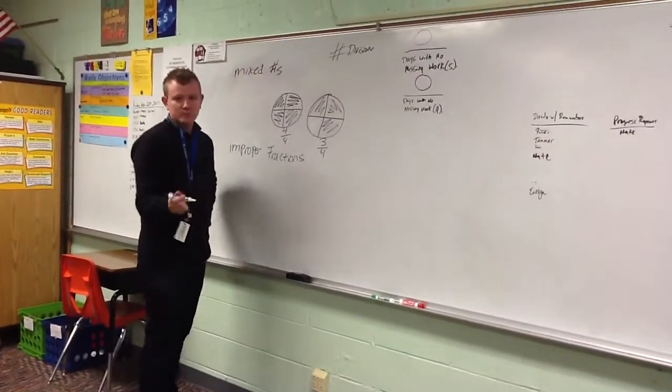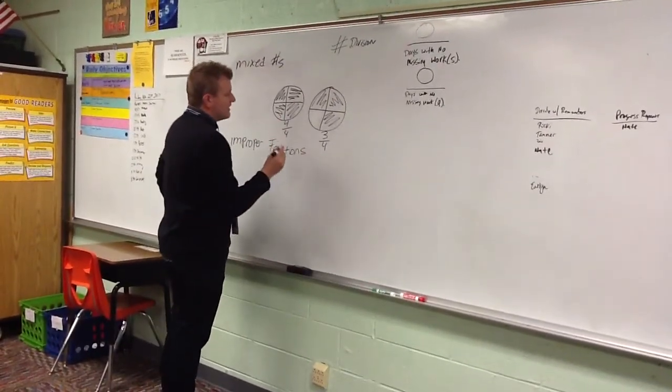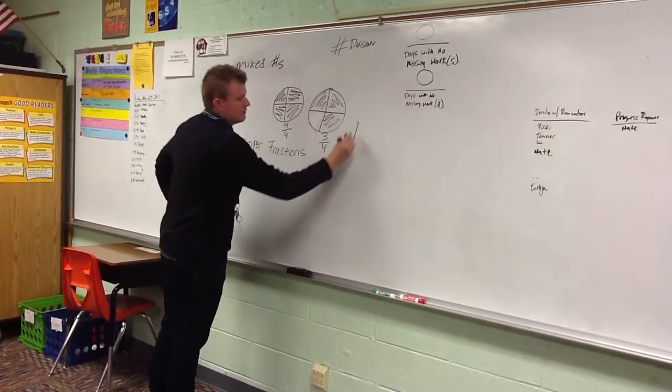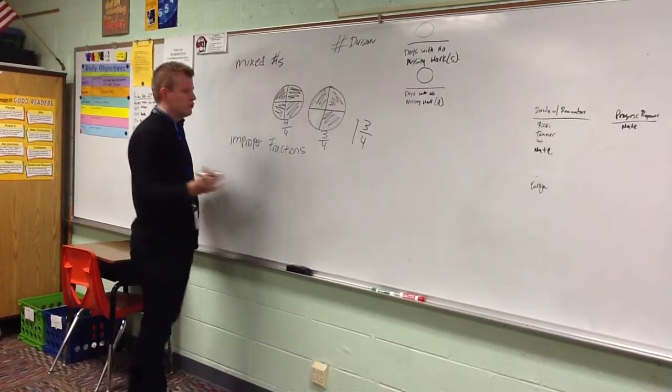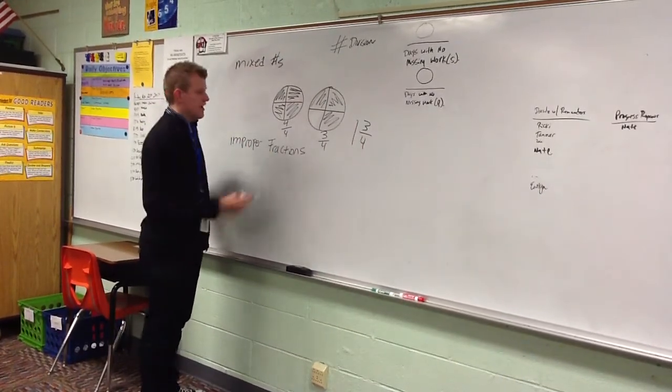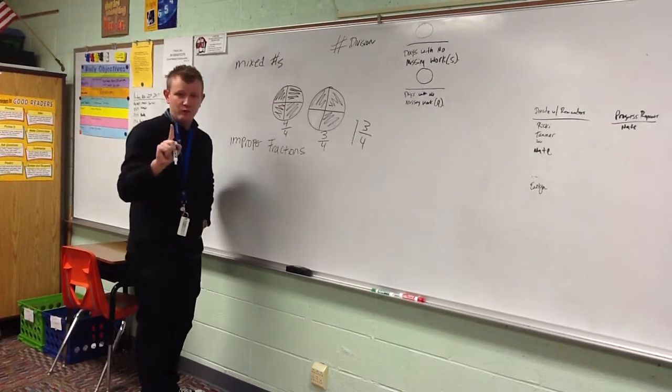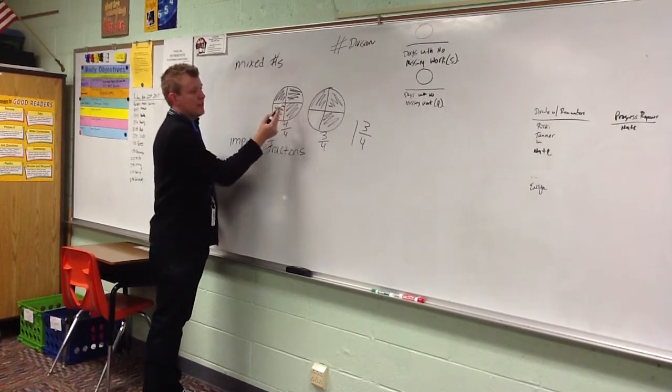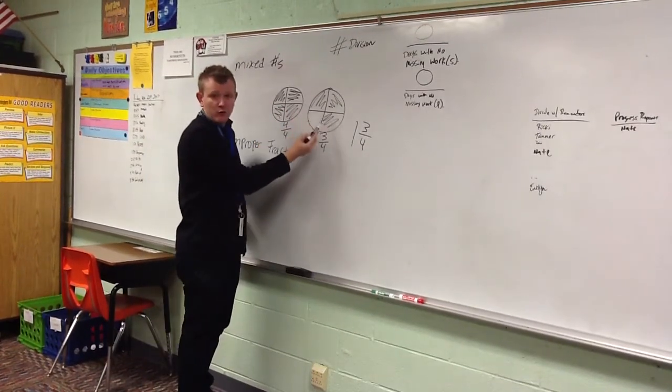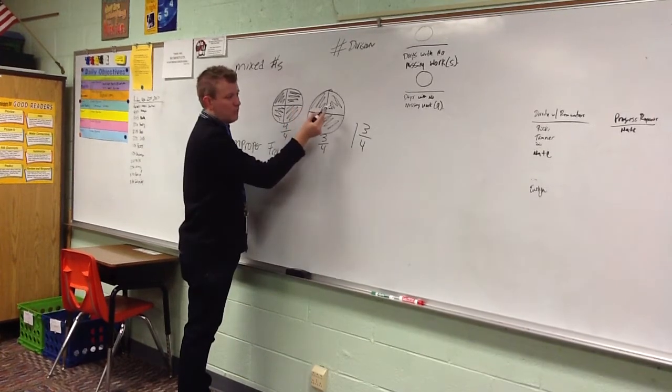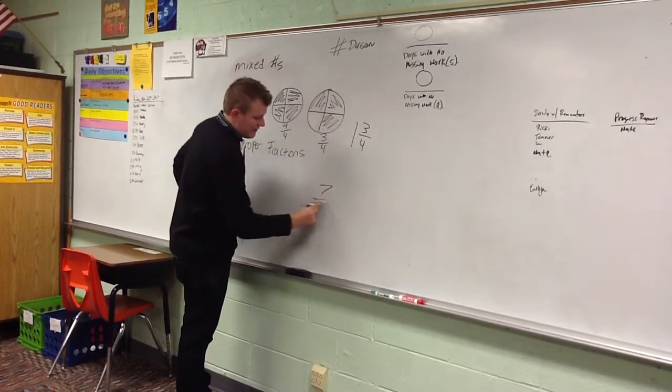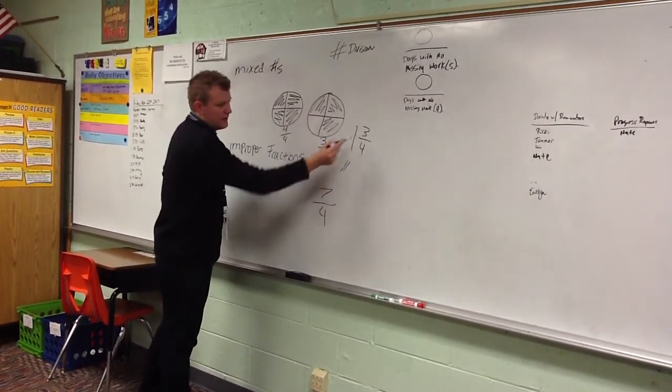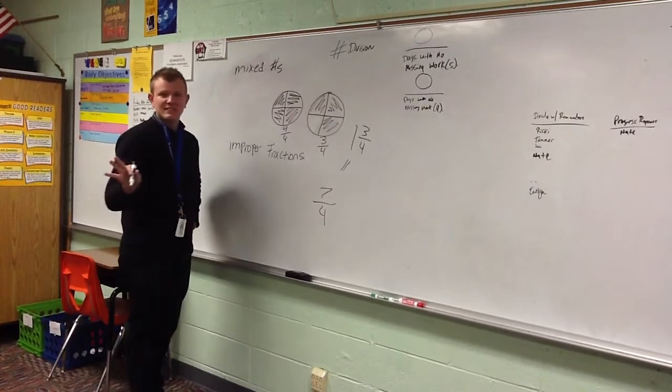So I had one and three fourths pizzas left. What I need to do here is I can look at this two ways. I have one and three fourths left. Or I can look at the individual pieces, which would be how we create an improper fraction. If one slice is one fourth of a pizza, I've got one fourth, two fourths, three fourths, four fourths. These are still fourths too. Five fourths, six fourths, and seven fourths. That's called an improper fraction. It's the same thing as one and three fourths. Seven fourths and one and three fourths, same deal.